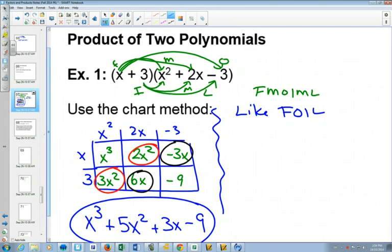If you would do FMOIL, then you would get x times x squared is x cubed plus 2x squared minus 3x. Then going from the inside, plus 3x squared plus 6x minus 9.